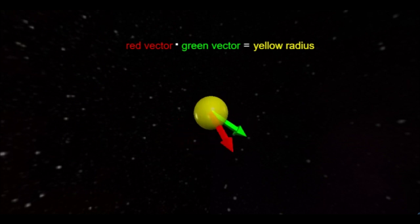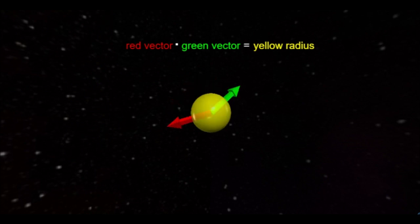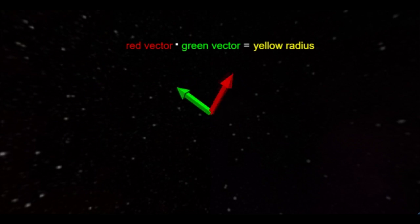Two vectors that are close to being parallel have a large positive dot product, while two vectors that are close to being perpendicular have a very small dot product, and two vectors that are close to being anti-parallel have a very large negative dot product.